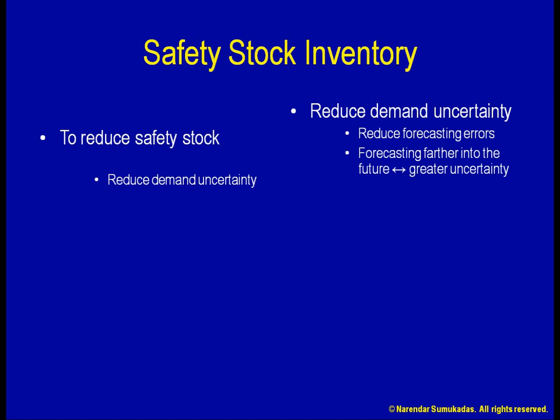Suppose I am dealing with a supplier who offers a 3-week lead time. I have to place my orders today for something that I will be using 3 weeks from today. Therefore, my orders will be based on my forecast for 3 weeks from today. On the other hand, suppose I get a supplier who offers a 1-week lead time. I only need to forecast 1 week ahead. A good question is, why did I select the 3-week lead time supplier? Obviously, because they are a little less expensive.